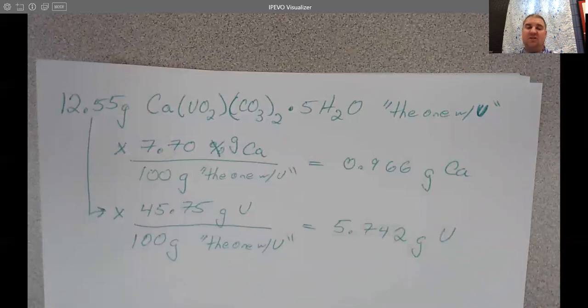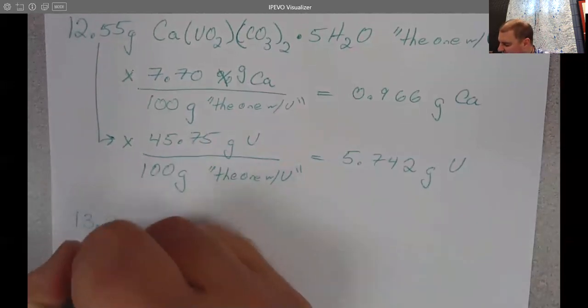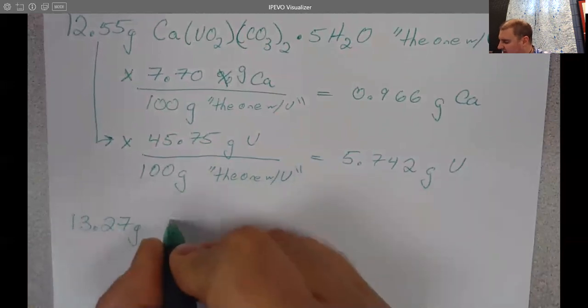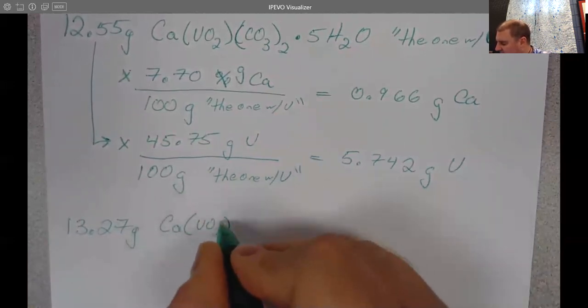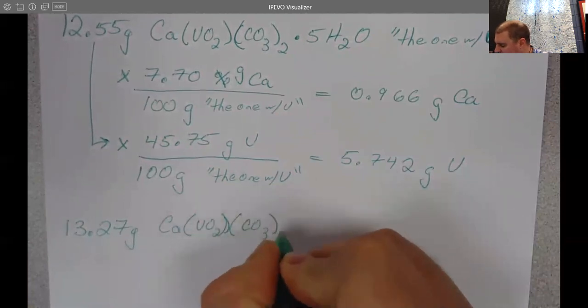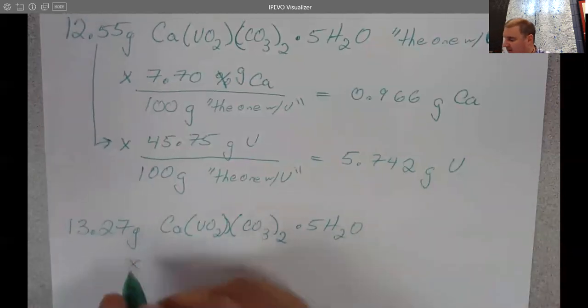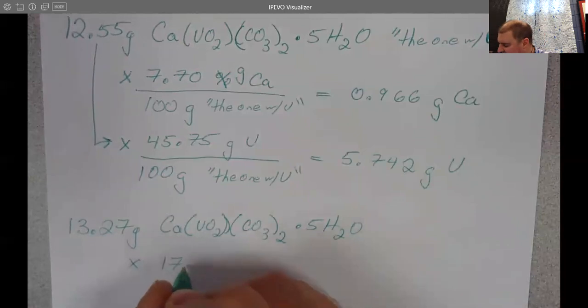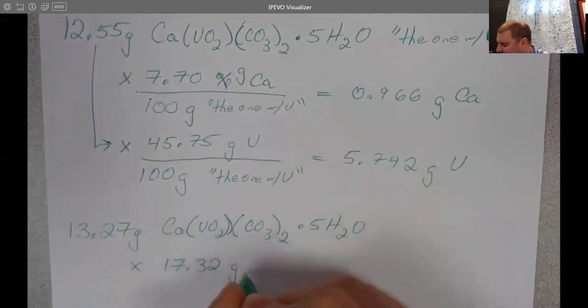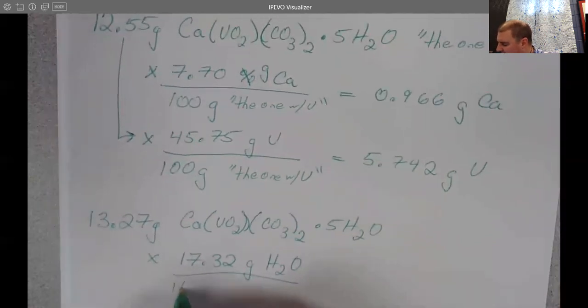Okay. If I wanted to do this one for water, the water question says if you have 13.27 grams of your particular compound, how much of it is water? Well, in this case, we had 17.32% water. Again, percent, remember, is always going to be per 100.